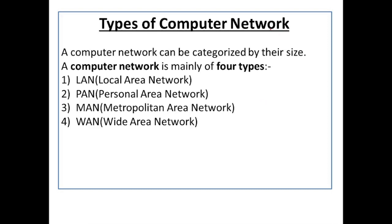Now we have types of computer network. Computer networks can be categorized by their size. A computer network is mainly of four types: Local Area Network (LAN), Personal Area Network (PAN), Metropolitan Area Network (MAN), and Wide Area Network (WAN).